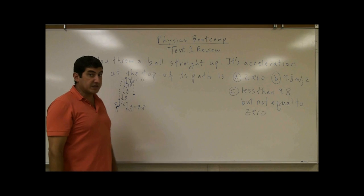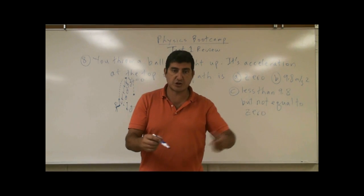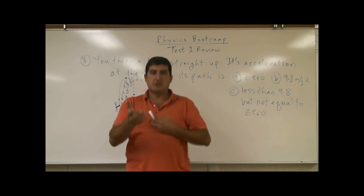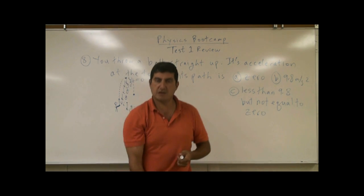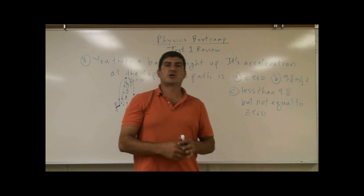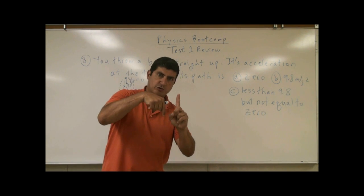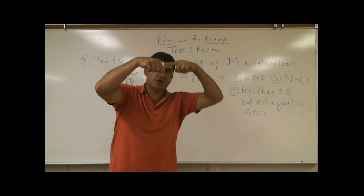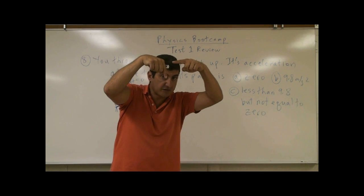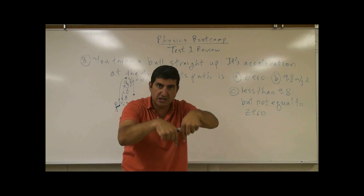The velocity becomes negative. Remember, velocity is a vector — magnitude and direction. So it's first positive, then negative as it falls back down. So velocity is positive, acceleration is negative. It slows down, slows down, slows down. It reaches a velocity of zero; acceleration is still negative. Then the velocity is negative, acceleration is negative.